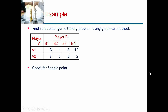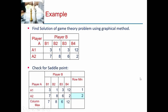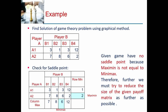As usual, we start by checking for a saddle point. We find the row minimum values: A1 gives 1 and A2 gives 2. The column maximum values are: B1=7, B2=8, B3=6, B4=12. The maximin value is 2 and the minimax value is 6. Since 6 ≠ 2, this problem does not have a saddle point. So we will try to reduce the matrix size using the rule of dominance first.